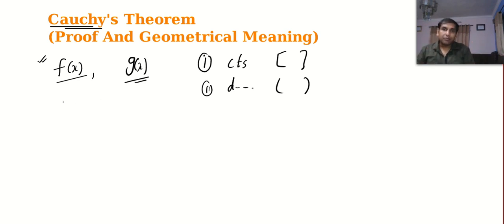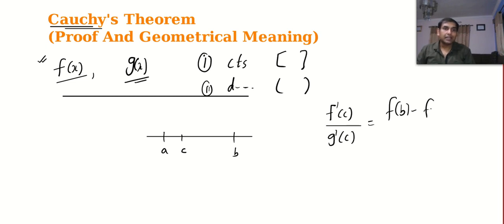Okay, and if the two conditions are satisfied then Cauchy tells us that there will be at least one point between a and b, namely c, in such a way that f dash of c by g dash of c is equal to f b minus f a by g b.